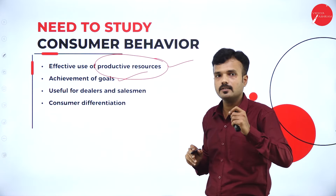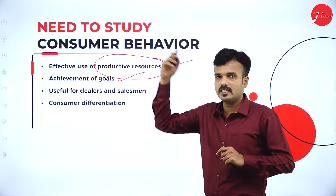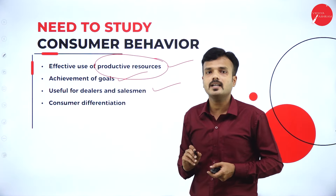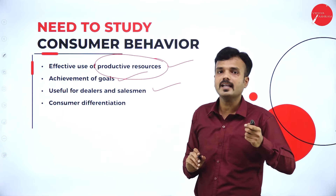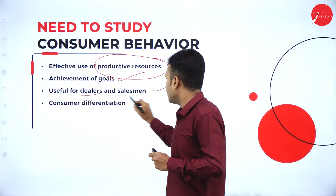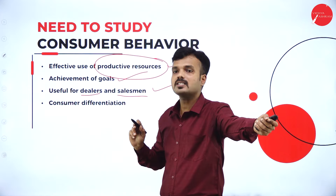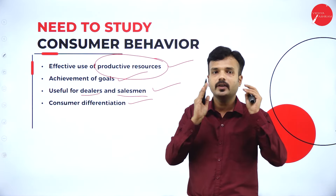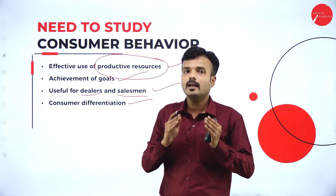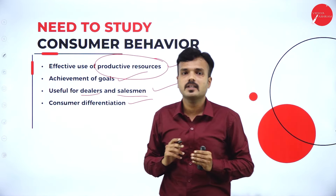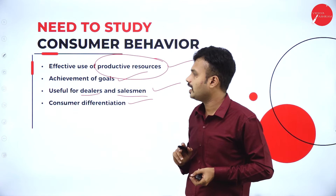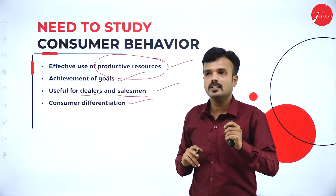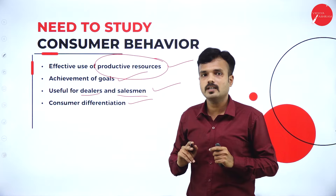To reach the ultimate goal of the business, the business sets small goals, and after reaching those small goals, it can reach the ultimate goal. Consumer behavior is also useful for dealers and salesmen to bring the product as per the demand of customers. Consumer differentiation: we divide consumers into various segments, and one category's needs and wants are not the same as another's. For example, the needs and wants of youths are completely different from those of aged people.